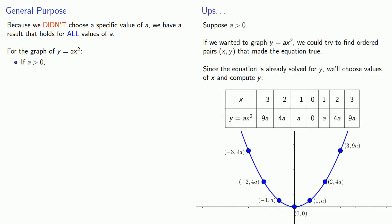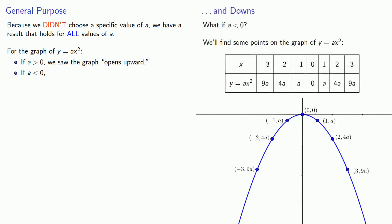And now, we have the following result. Because we didn't choose a specific value of a, we have a result that holds for all values of a. For the graph of y equals ax squared, if a is greater than zero, our graph looks like this, and we saw that the graph opens upward. If a is less than zero, our graph looks like this, and we saw that the graph opens downward.